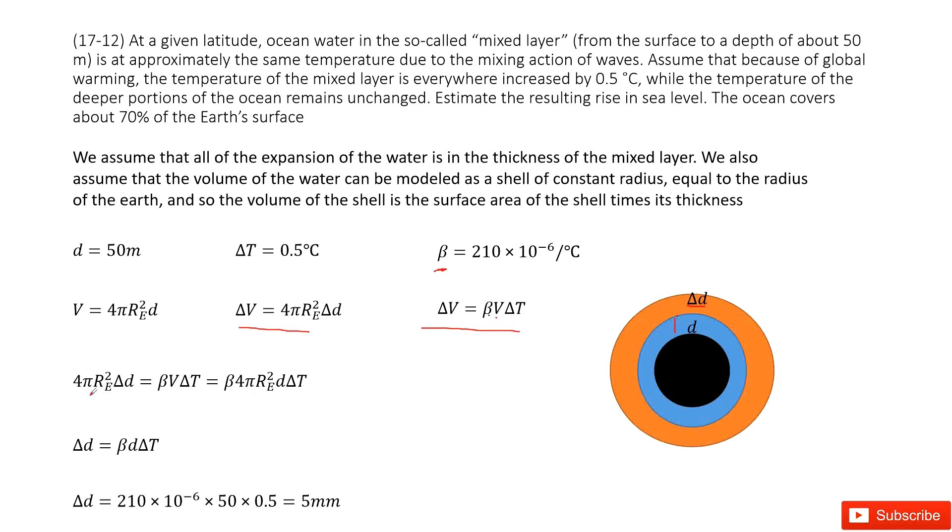So we write it out. The left-hand side is ΔV equals the spherical surface times the d. The change of d is the orange part. And the left-hand side comes from our textbook, the thermal expansion: β V ΔT. Now we replace the V as 4π R_e squared d. This is what we just talked about.